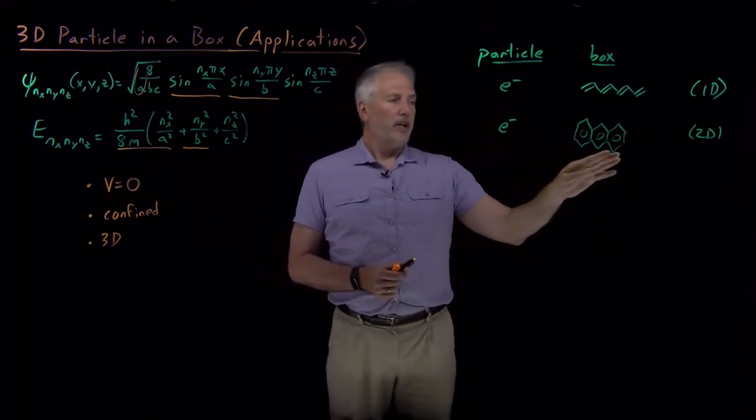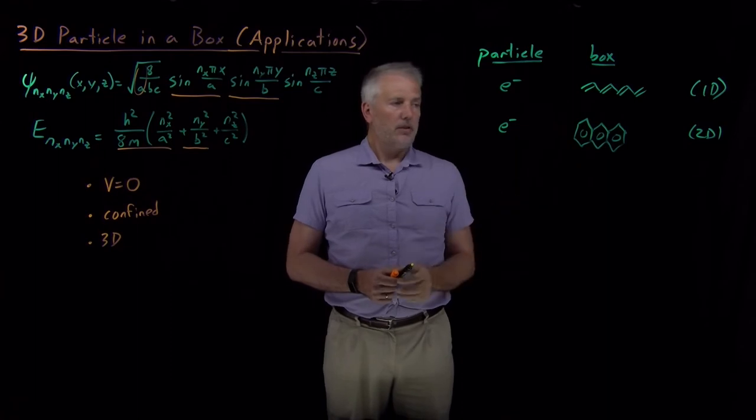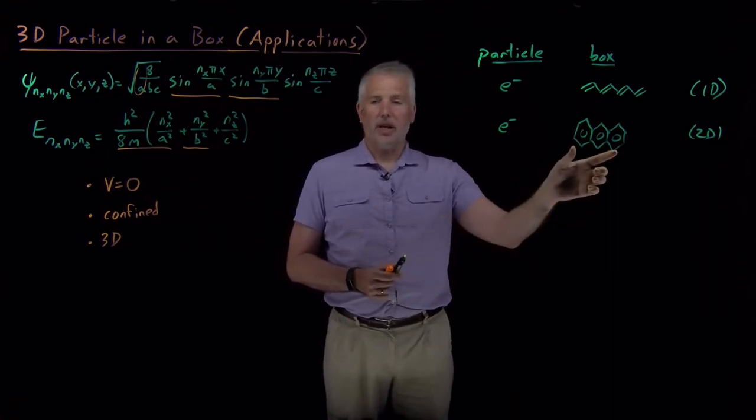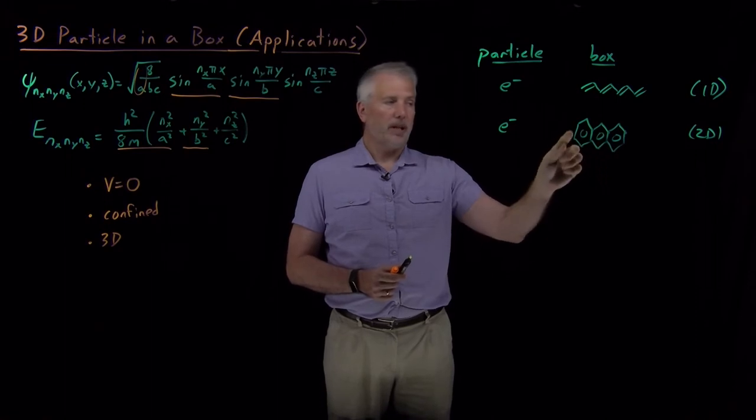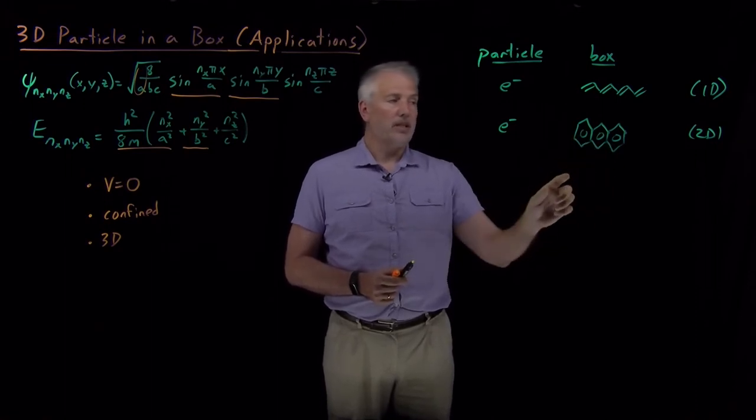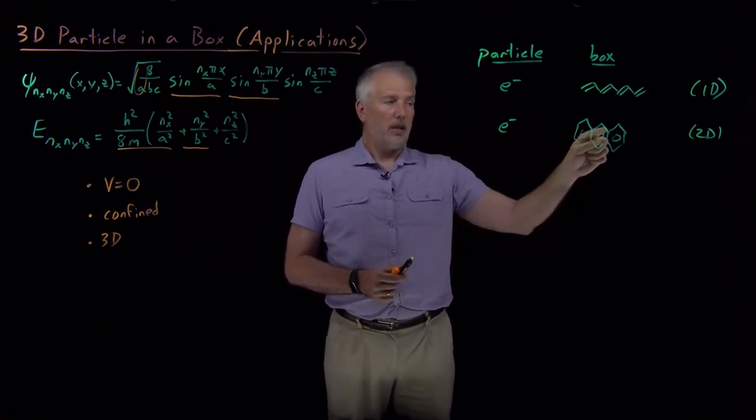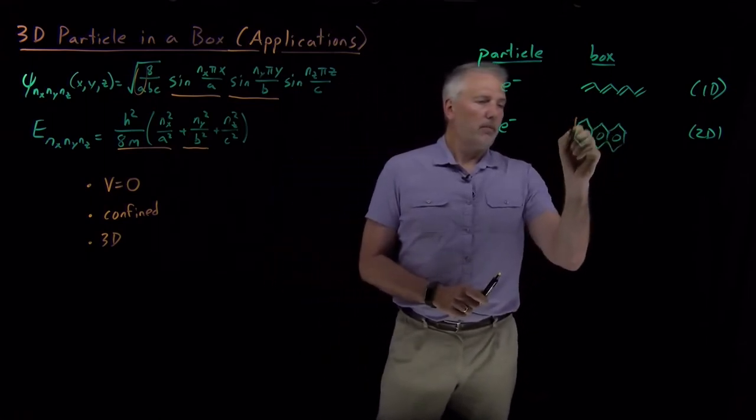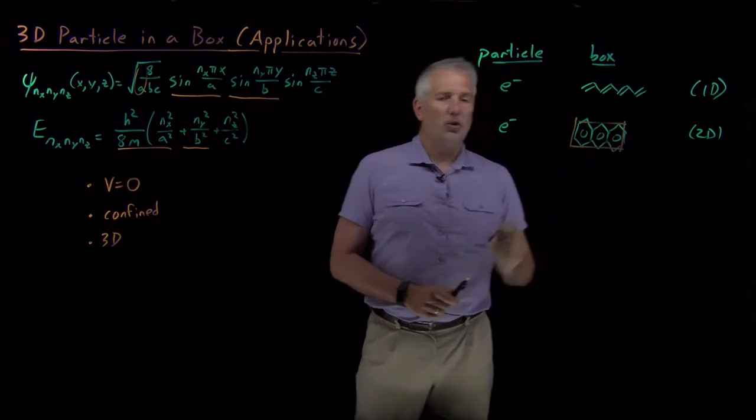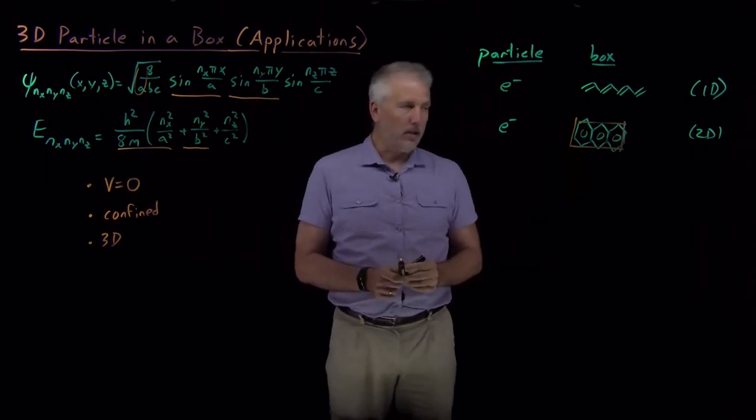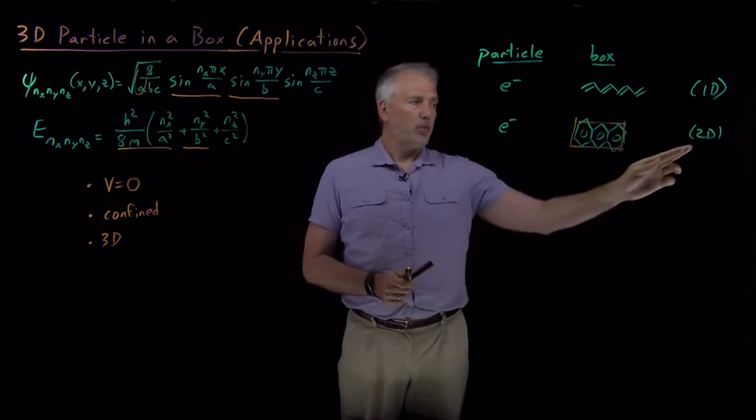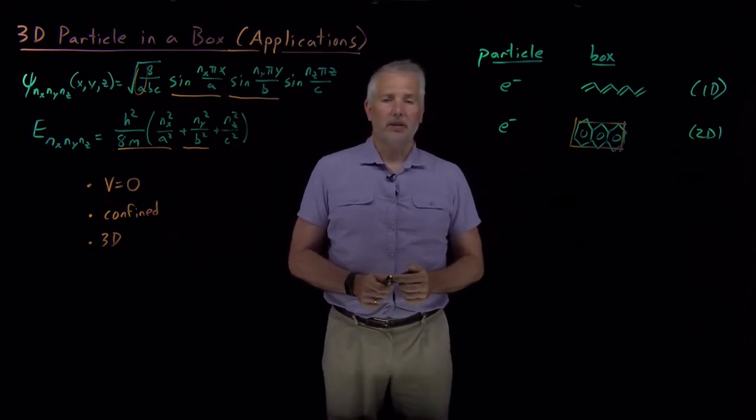If I draw conjugated planar organic molecules like this one, polycyclic aromatic molecules, where the pi electrons in these connected benzene rings are delocalized over pretty much the whole molecule, I can think of the box in this case as a two-dimensional box. It has length and height in this example, but it doesn't have any depth.